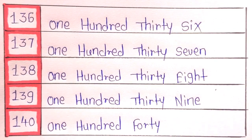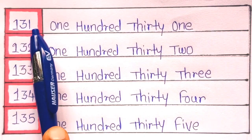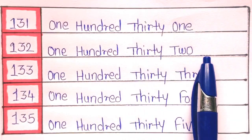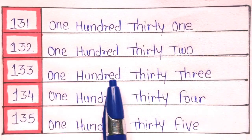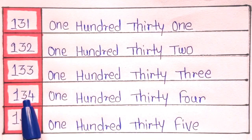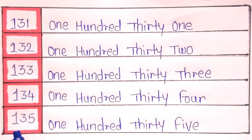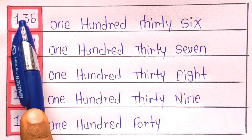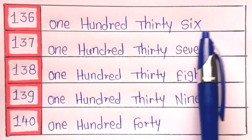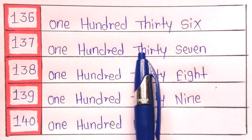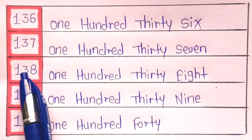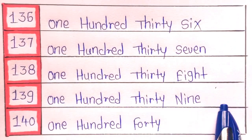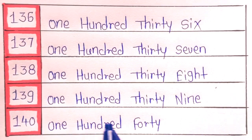Now let's revise with me. 131 is one hundred thirty one. 132 is one hundred thirty two. 133 is one hundred thirty three. 134 is one hundred thirty four. 135 is one hundred thirty five. 136 is one hundred thirty six. 137 is one hundred thirty seven. 138 is one hundred thirty eight. 139 is one hundred thirty nine. And 140 is one hundred forty.